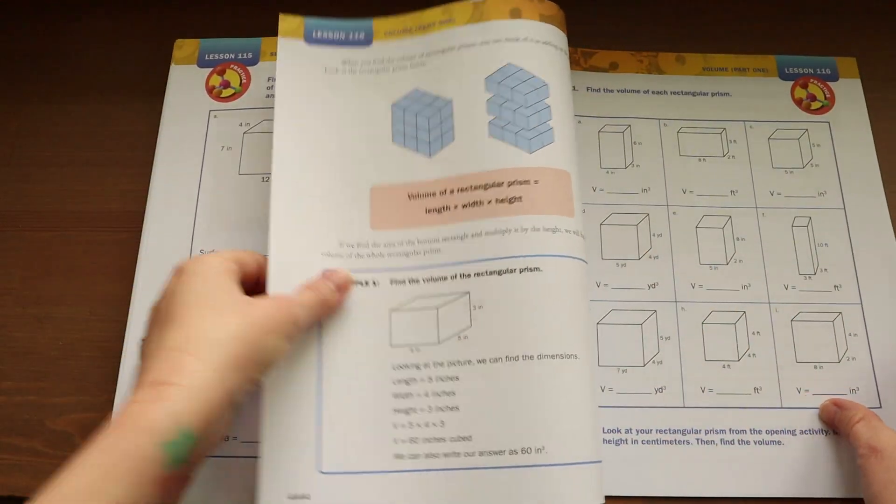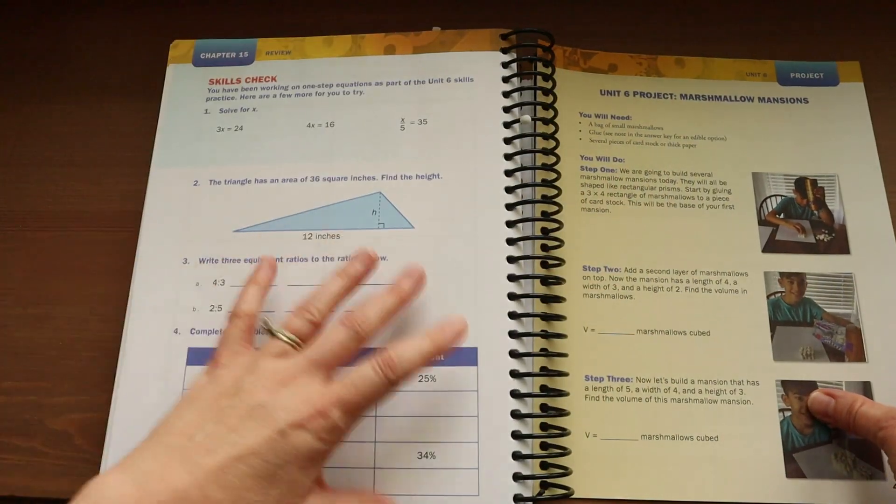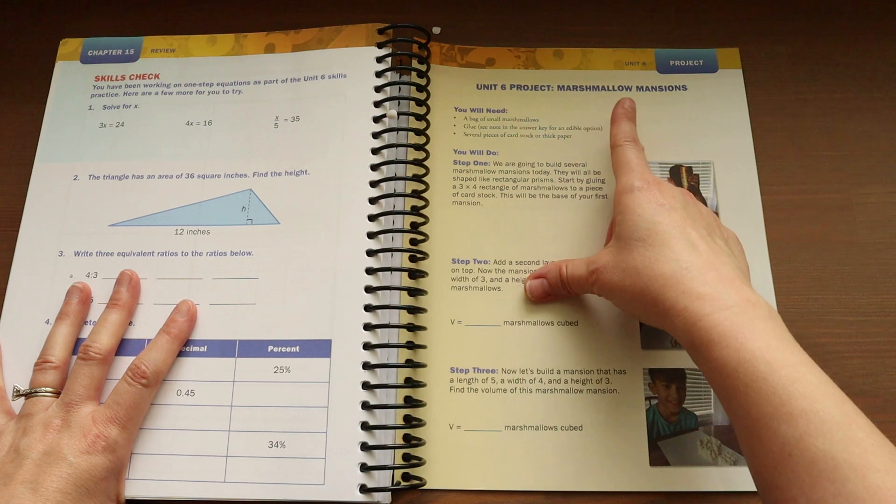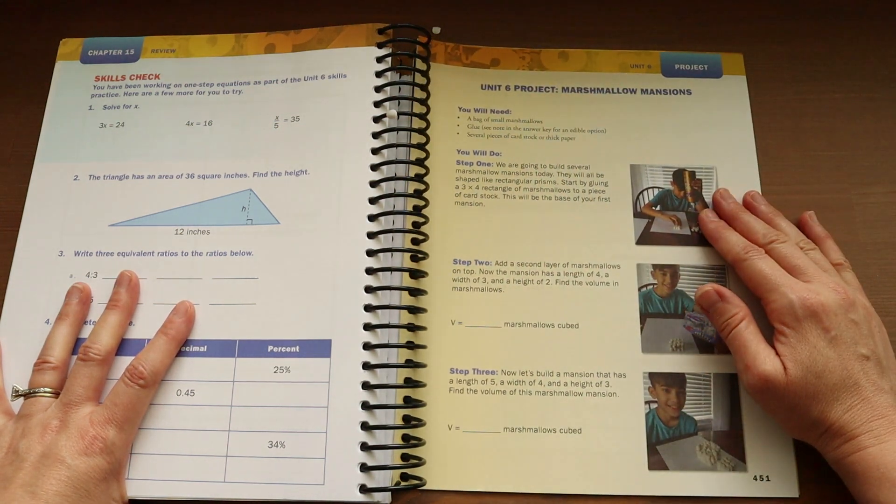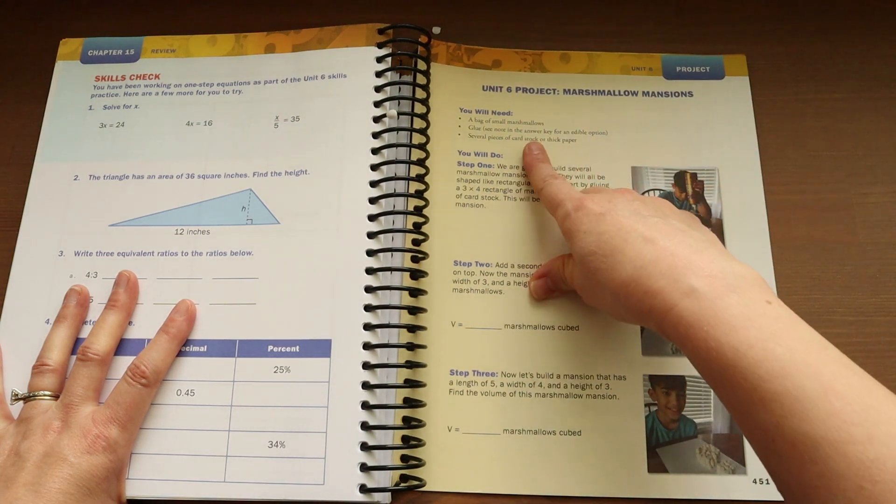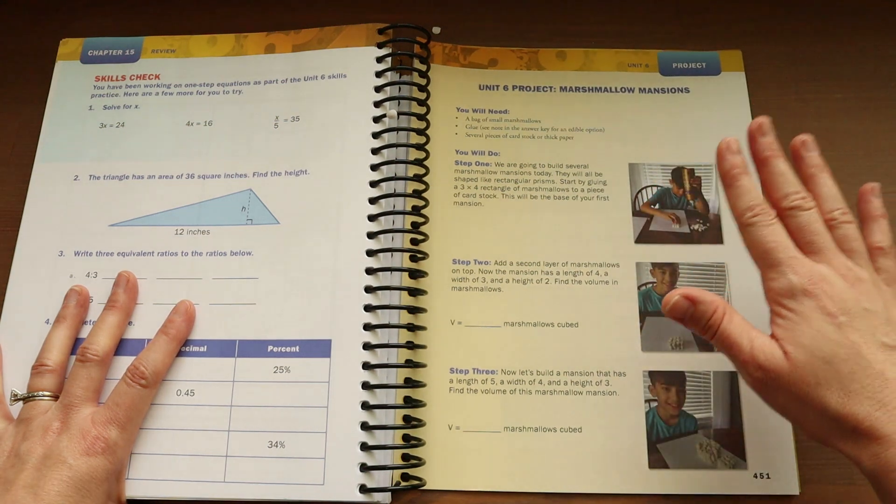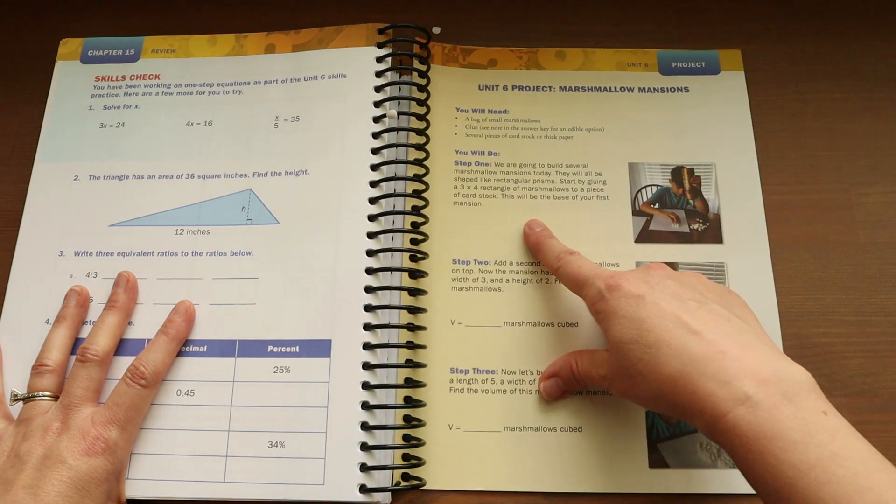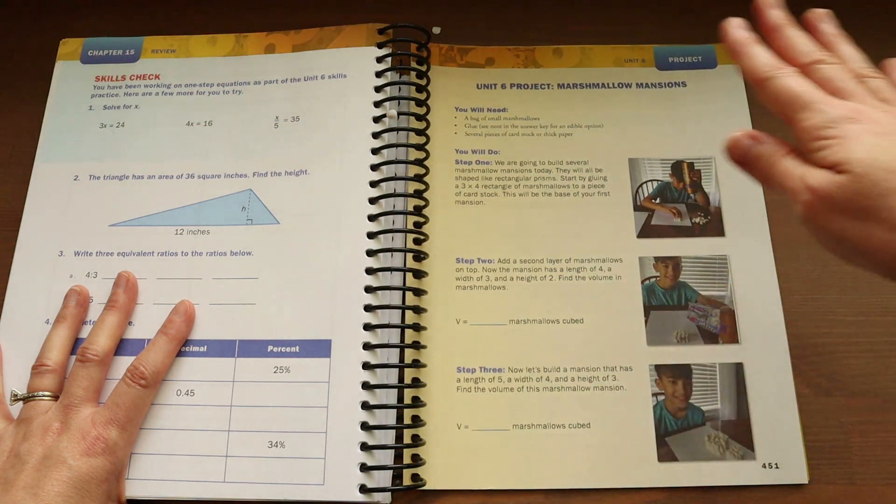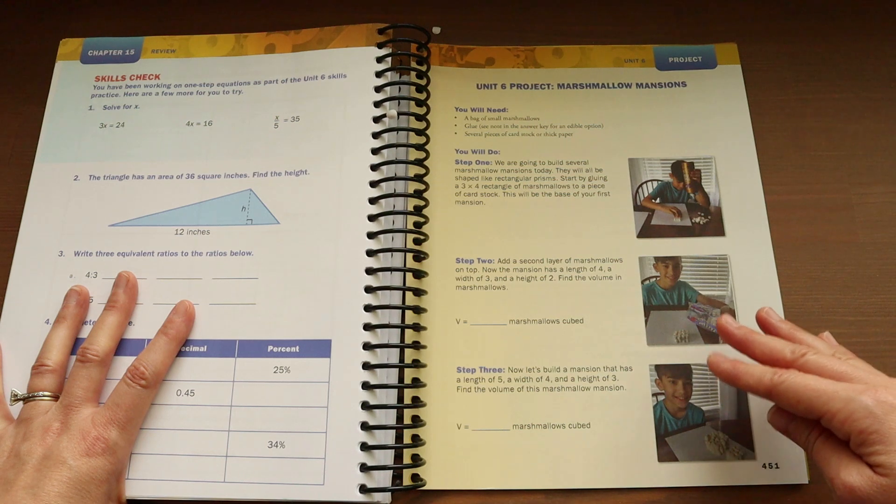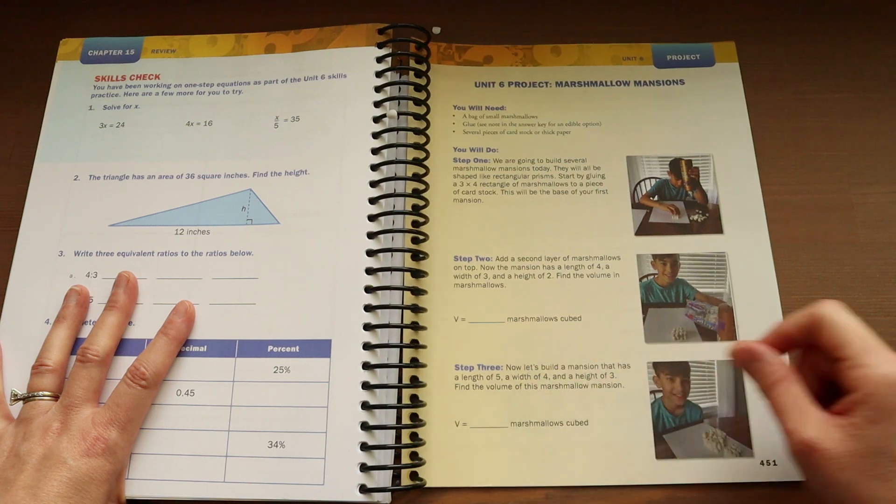Now, the last thing that I wanted to show you guys is what a project looks like. So, I'm going to go all the way to the back. Now, this is the unit six project. It is a marshmallow mansion. So, you're going to need a bag of marshmallows, some glue, and several pieces of cardstock or thick paper. And so, your child is going to create a three by four rectangle of marshmallows. And they will glue that to the cardstock. And then they're going to add a second layer of marshmallows. And then they are going to calculate what the volume of the marshmallows is.